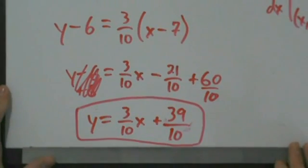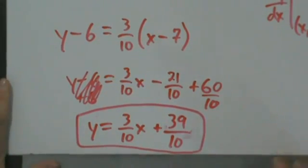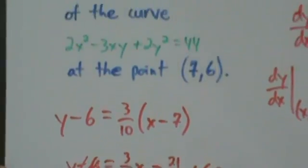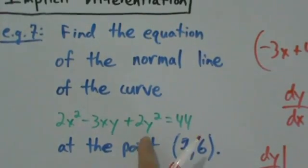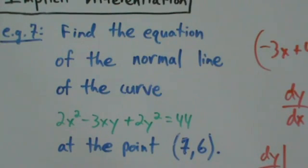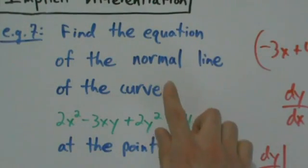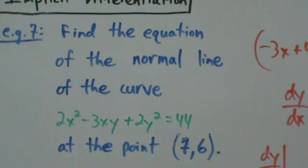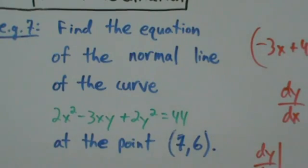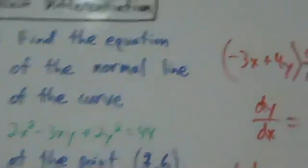So y equals 3/10 x plus 39/10 is the equation of our normal line. If we graph this, the line is perpendicular to the tangent line of the curve at that point. Since the slope of the tangent line and the slope of the curve are the same thing, the normal line is also perpendicular to the curve — meaning it intersects the curve at a 90-degree angle, just like it intersects the tangent line at a 90-degree angle.